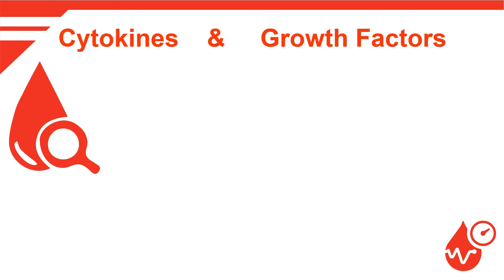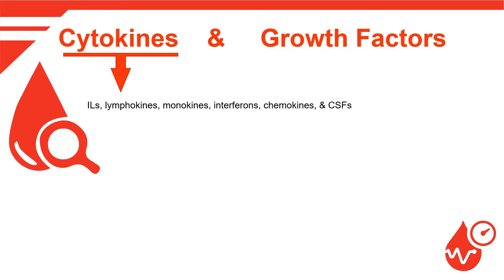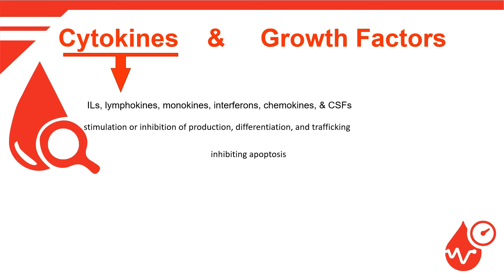Cytokines and Growth Factors: A group of specific glycoproteins called hematopoietic growth factors or cytokines regulates the proliferation, differentiation, and maturation of hematopoietic precursor cells. Cytokines are a diverse group of soluble proteins with direct and indirect effects on hematopoietic cells, including interleukins, lymphokines, monokines, interferons, chemokines, and colony-stimulating factors. They are responsible for the stimulation or inhibition of the production, differentiation, and trafficking of mature blood cells and their precursors. Cytokines also prevent hematopoietic precursor cells from dying by inhibiting apoptosis.